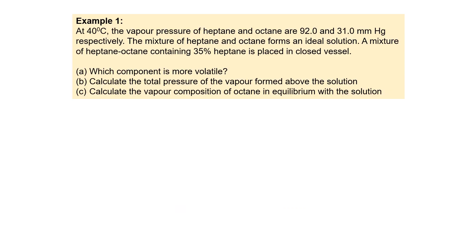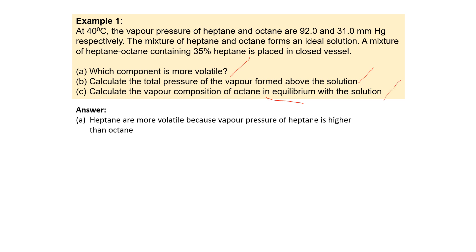Here is a worked example. At 40 degrees Celsius, the vapor pressures of heptane and octane are 92 and 31 mmHg respectively. The mixture of both compounds forms an ideal solution. A mixture containing 35% heptane is placed in a closed container. Question A asks which component is more volatile — heptane is more volatile because its vapor pressure (92 mmHg) is higher than that of octane (31 mmHg).